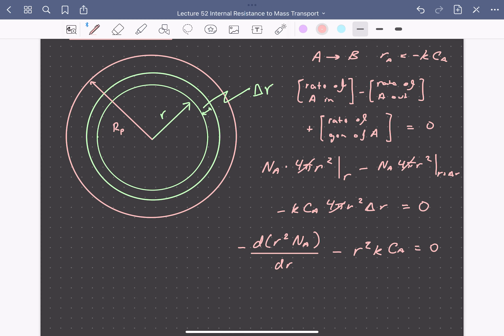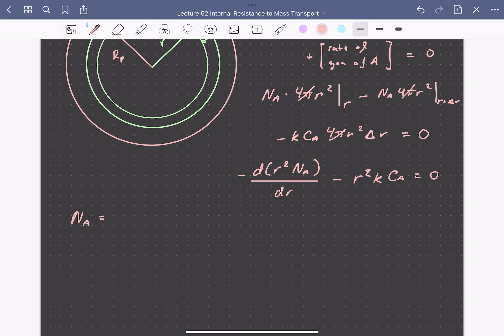So our flux term here, N sub A, can be expressed using Fick's law. So we can write that the flux of A by diffusion is going to be minus a diffusion coefficient of A. So here this is going to be the effective diffusivity, which again takes into account that the surface area of the entire sphere is not available for diffusion, and that the pores are not straight, times dCA/dr.